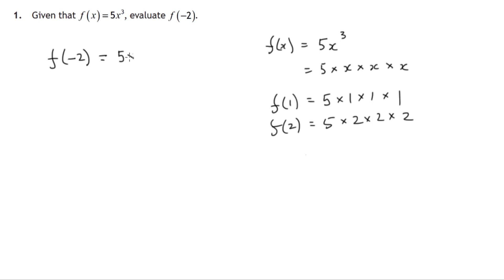So out would come 5 times negative 2 times negative 2 times negative 2. Paper 1 questions you're not allowed to use calculators, so we have to do this in our heads.